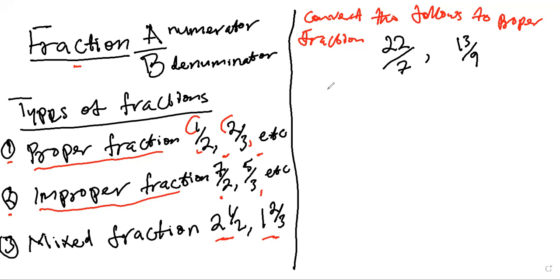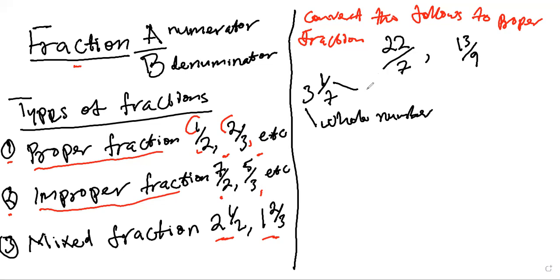So how do we do this? We're going to say: how many sevens do we have in 22? It's going to be three. So we have three sevens in 22. Then 22 divided by seven is going to be three. You have to put the remainder on top and put seven at the bottom. So in order to reverse improper fraction to a proper fraction — because this wasn't proper — we try to bring this back, and what we arrive at is a mixed fraction, because we have a whole number and a fraction.